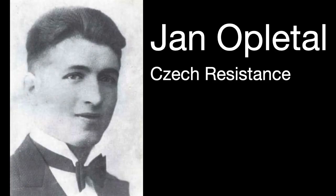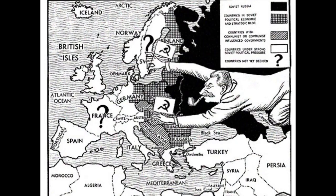Did the Czechs put up resistance? Yes. Jan Opeltal was a medical student at the University of Prague who organized a resistance movement against the Nazi invasion. The Czech police refused to arrest him even under direct Nazi order. But when he led a parade through downtown Prague, the Nazis fired into the crowd. Jan Opeltal was shot, wounded, and died several days later — becoming a symbol of Czech resistance. There was continued Nazi resistance during the occupation of 1939 through 1945, and some of that resistance was communist, since Nazism and communism are diametrically opposed.